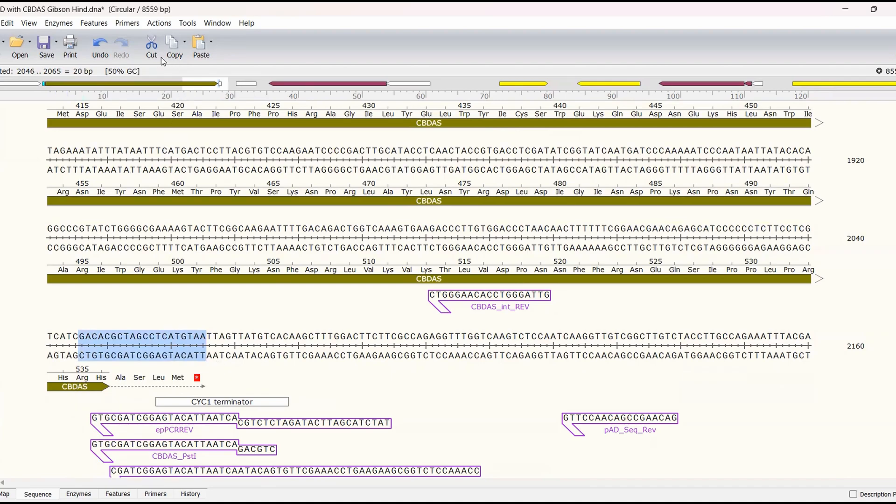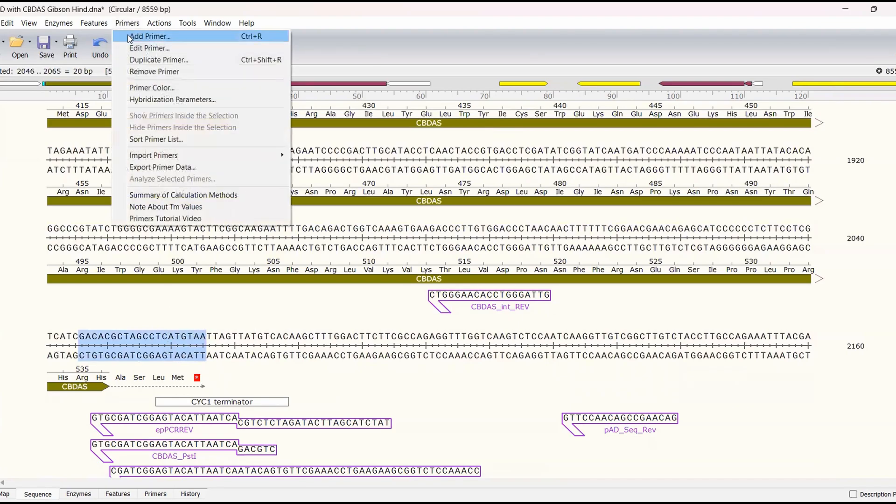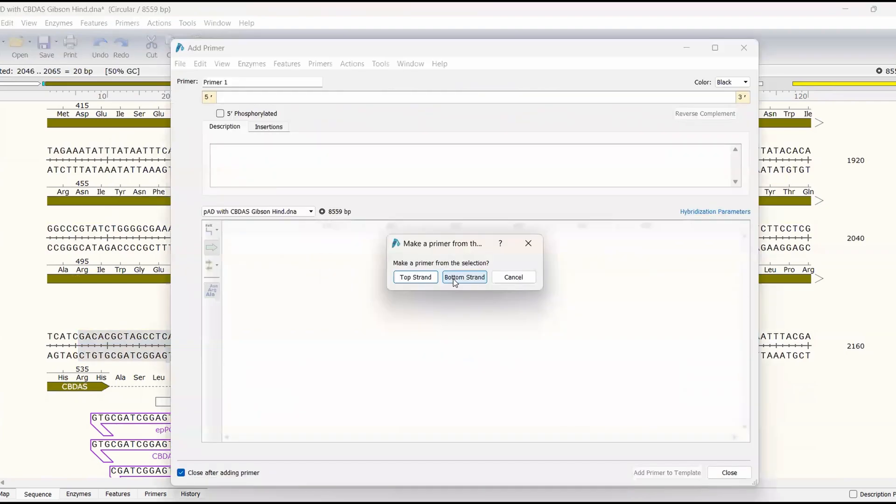So you can see the GC content is 50 percent. It said the TM a minute ago but we'll just add the primer, add primer to the bottom strand this time because this is a reverse primer.